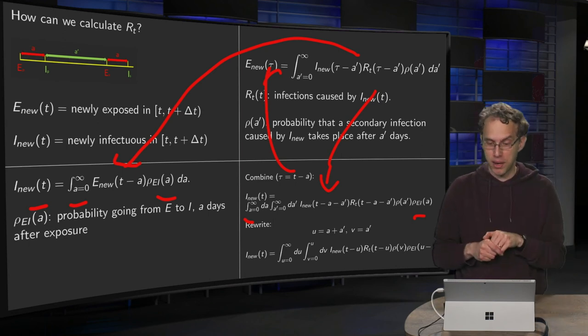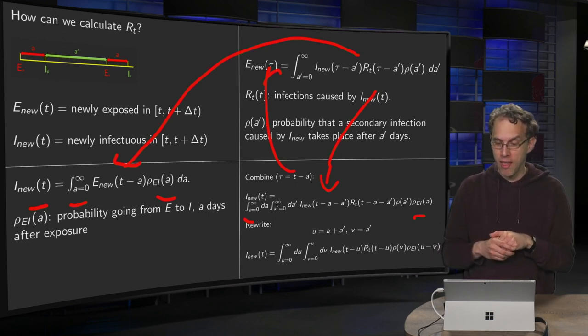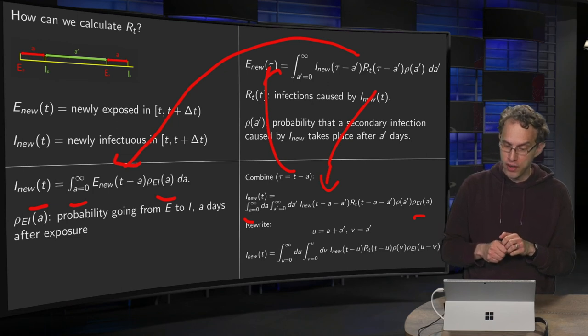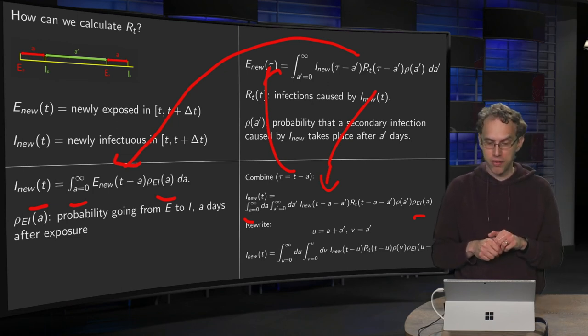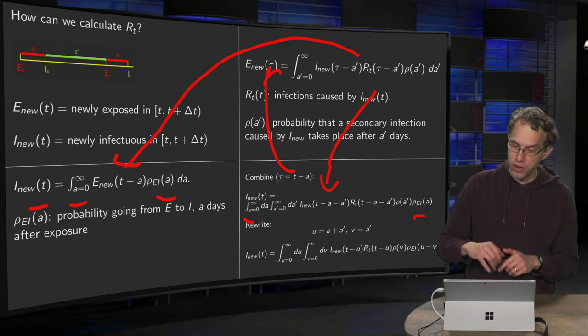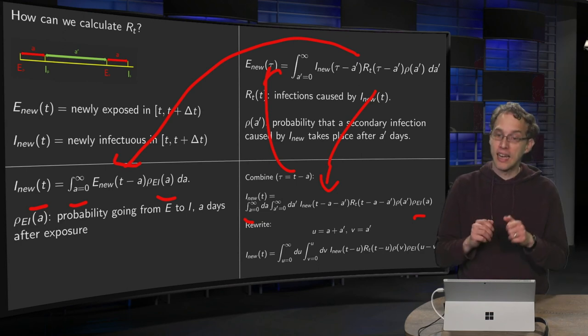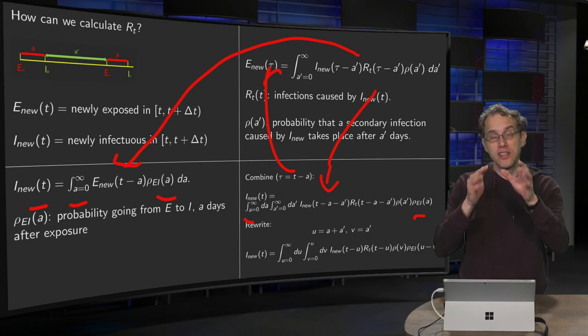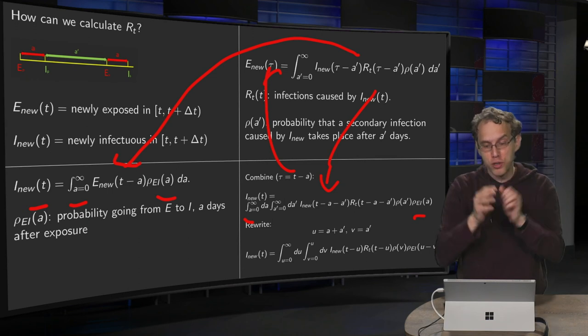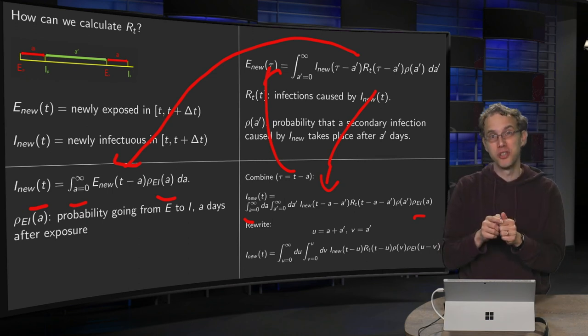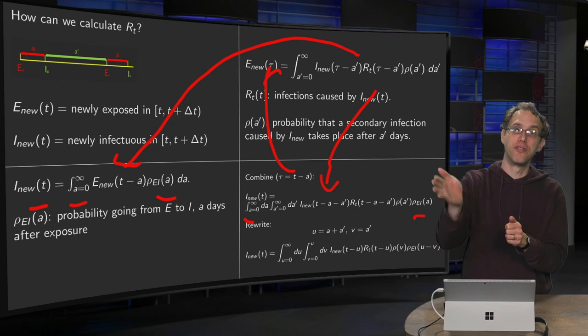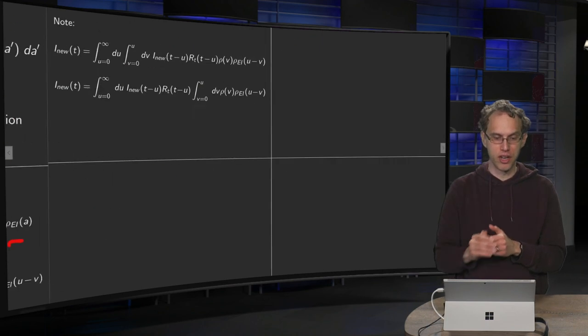And this I_new of t minus a minus a prime becomes t minus u, the R_t of t minus a minus a prime becomes t minus u as well. For the rho of a prime we get rho of v, and for rho_ei we get rho of u minus v. Another nice part is that the part we do not know, the part we want to determine, only depends on u.